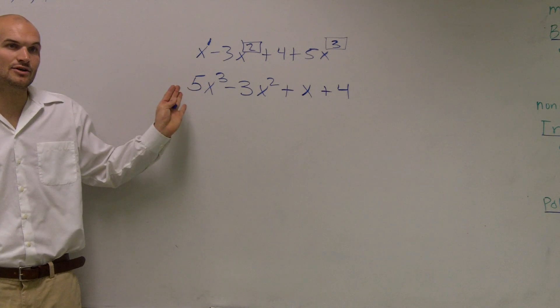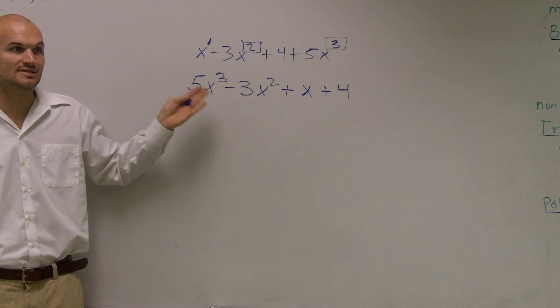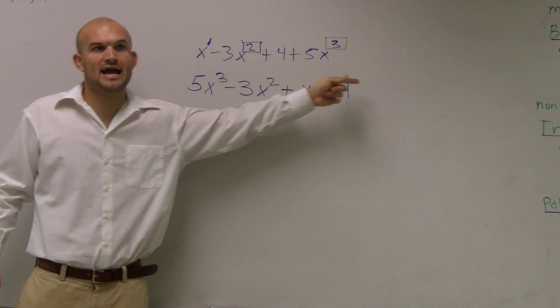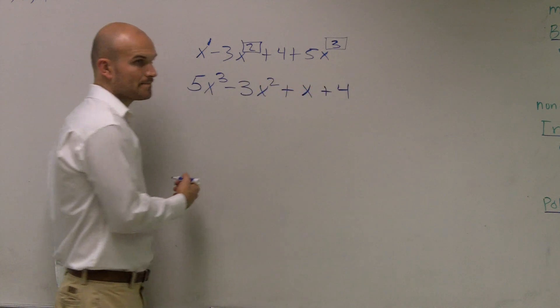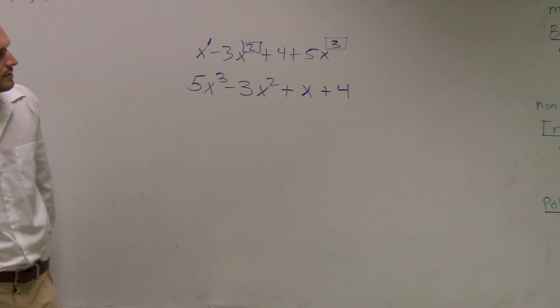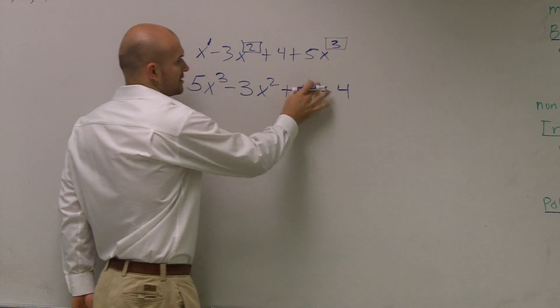So now it's in descending order, or now it's in standard form. And the way that we know it's in standard form is, you can see that my exponents go from largest to greatest. All right? And if I just want to be technical, we'll talk about that later.